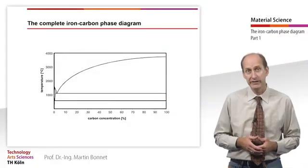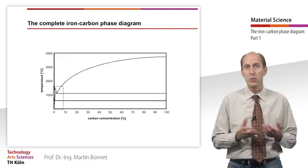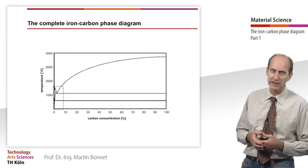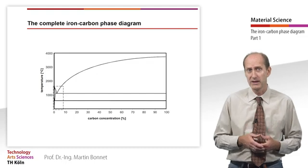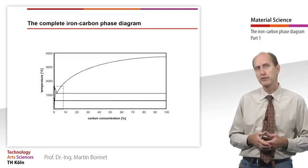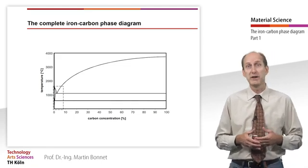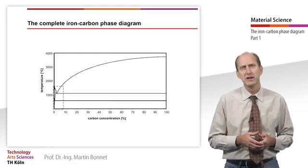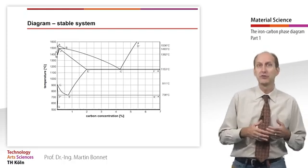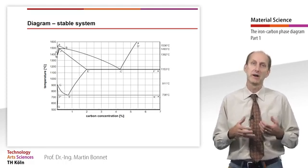The complete iron-carbon phase diagram shows the phase boundaries for all concentrations between 0 and 100% carbon content at any given temperature. At high carbon concentrations, however, the material mostly consists of graphite and is unsuitable as a constructional material. Interesting from a technical point of view are only carbon concentrations lower than 6.67%. This is why the area enclosed by the dashed lines is usually shown in detail. If we zoom in on this area of up to 7 weight percent carbon, we obtain a portion of the iron-carbon phase diagram.